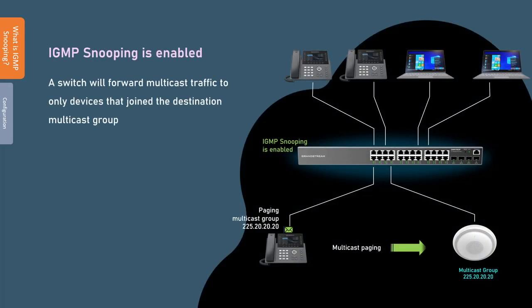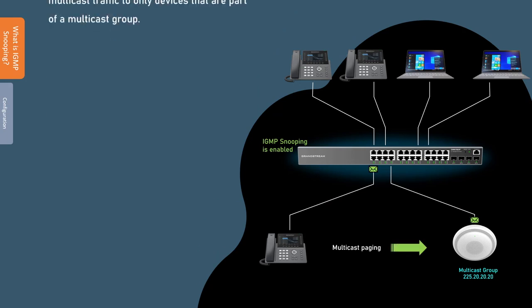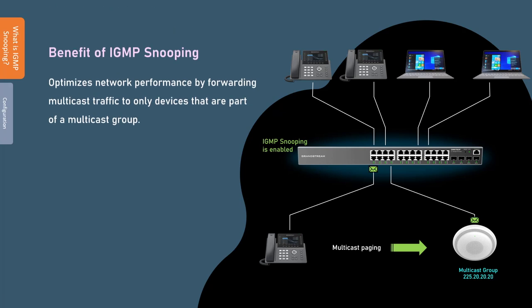With IGMP enabled, the switch will learn the devices that are members of a multicast group and forward the traffic to only the members. This example demonstrates how the switch forwards the multicast traffic only to the IP intercom for the multicast destination 255.20.20.20. The main benefit of enabling and configuring IGMP snooping on the switch is to optimize network performance by making the switch forward multicast traffic to only relevant devices, reducing unnecessary network traffic.